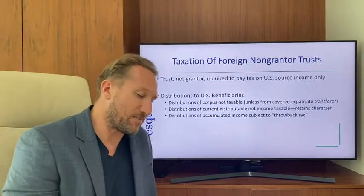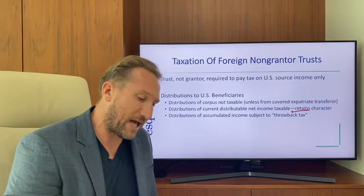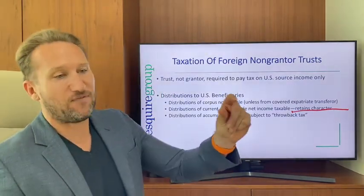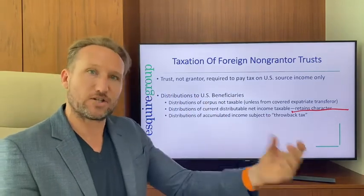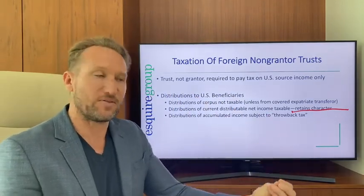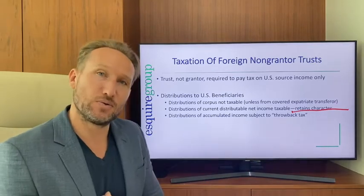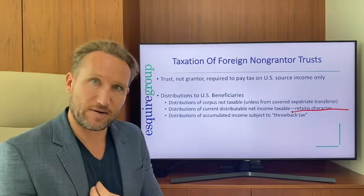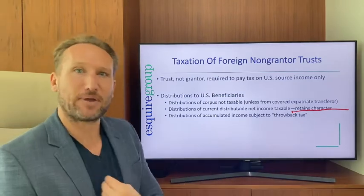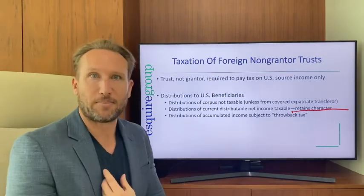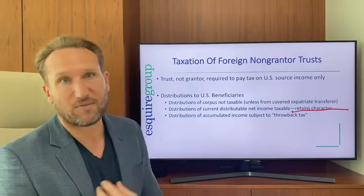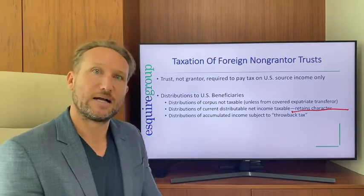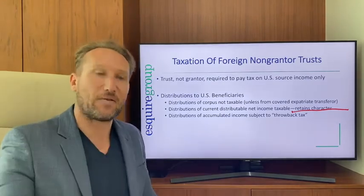One nice thing is that income coming out of a trust retains its character. If it's current income distributed from the trust, the beneficiary pays at ordinary income rates if it's ordinary income. But if it's capital gains, they can get the long-term capital gains rate of 20%, or the qualified dividend rate of 20%. There are advantages to how current income distributions are taxed.